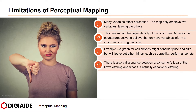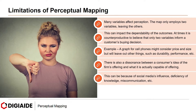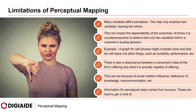There is also a dissonance between a consumer's idea of the firm's offering and what it is actually capable of offering. This can be because of social media's influence, deficiency of knowledge, miscommunication, etc. Additionally, information for Perceptual Maps comes from surveys, which are hard to get hold of.